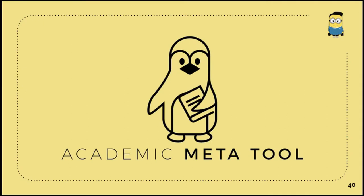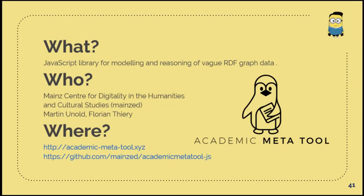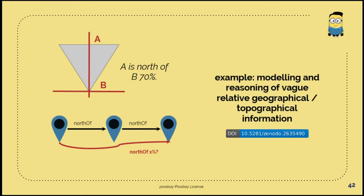Then, the second part is the AMT, the Academic Meta Tool. What is this? This is a JavaScript library for meta modeling and reasoning some kind of vague RDF graph data. It's developed by the Mainz Center of Digitality and Humanities and Cultural Studies in Mainz too. This has totally some kind of different approach.